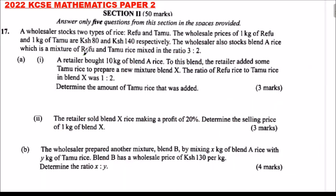This is the 2022 KCSE Mathematics Paper 2, Section 2. It consists of 10 questions, but you are supposed to answer five. Each question is awarded 10 marks. Number 17 — answer only five questions from this section in the spaces provided.